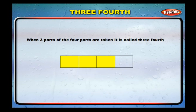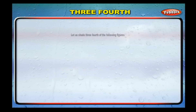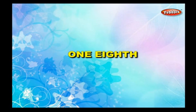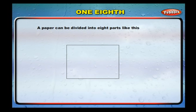Three-fourths: when three parts of the four parts are taken, it is called three-fourths. It is written as 3/4 and read as three by four. Let us shade the three-fourths of the following figures: shade three of the four parts of this square, shade three of the four parts of this rectangle, shade three of the four parts of this circle.